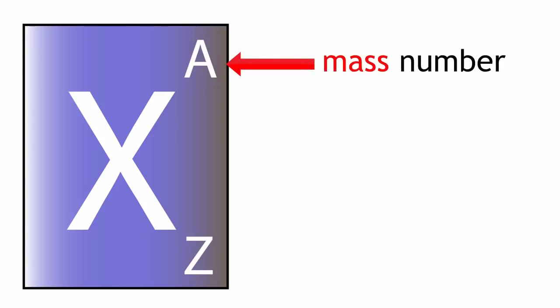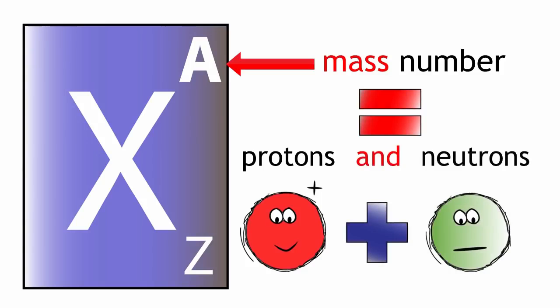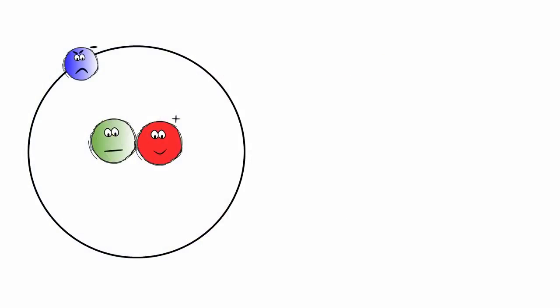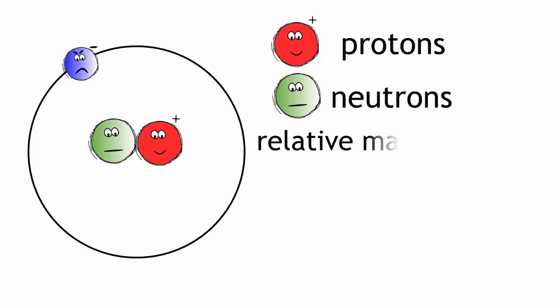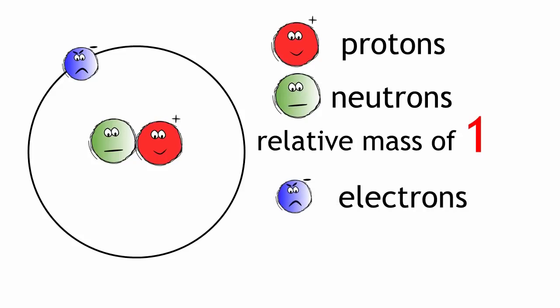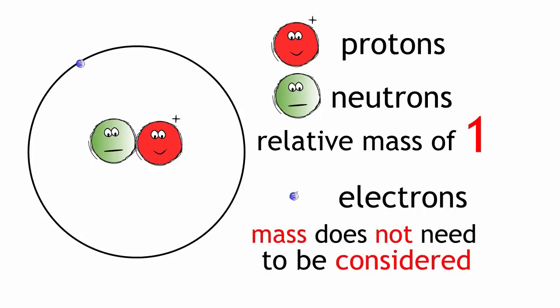The next number we look at is the mass number. The mass number has a symbol A. The mass number tells you how many protons and neutrons are in one atom of an element. We need to remember that protons and neutrons each have a relative mass of 1, and that electrons are so small that their mass does not need to be considered in the mass number of an atom.